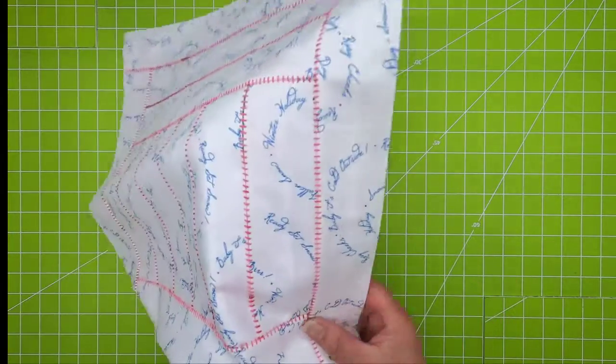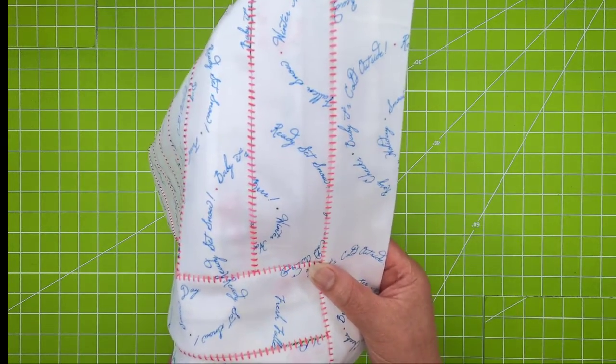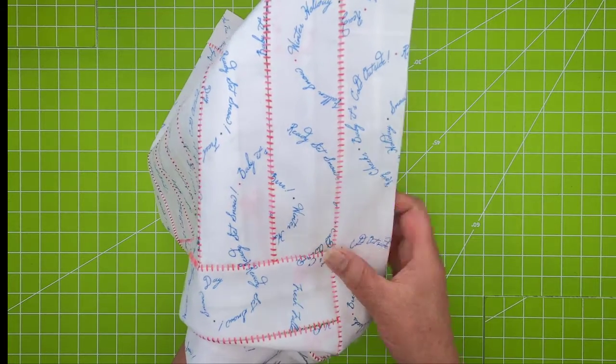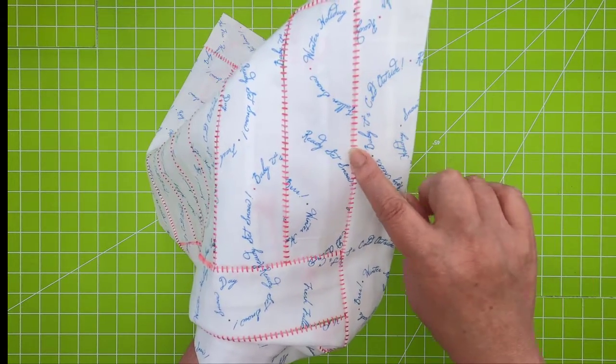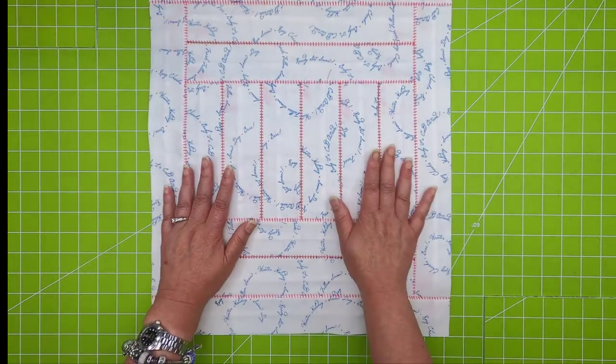But then other parts of the project, say here, have just a standard seam with the same stitch, but you're not seeing the space in between. It's just a different way to use the stitches.